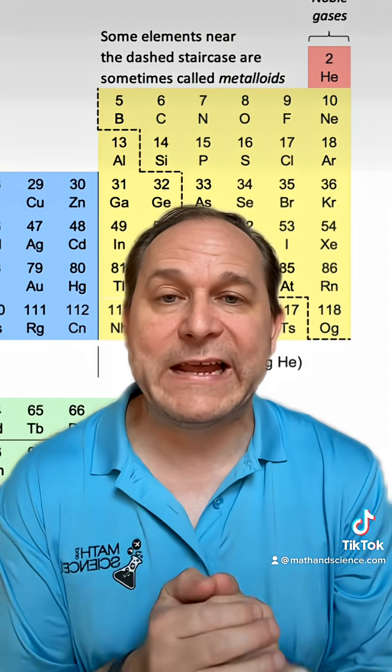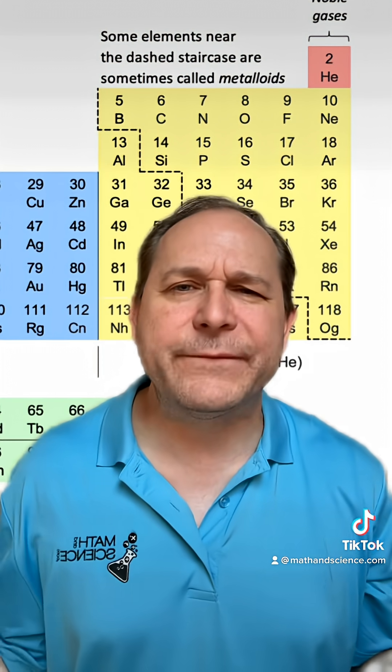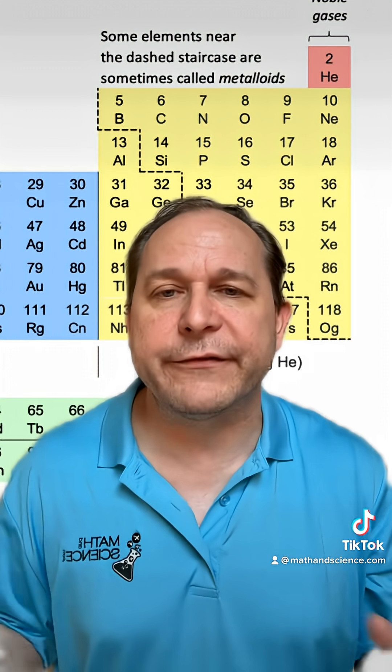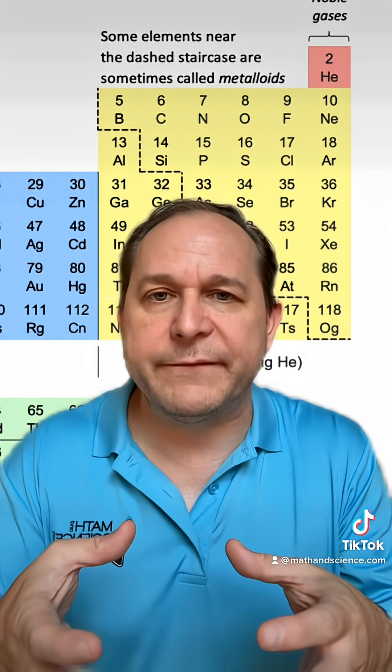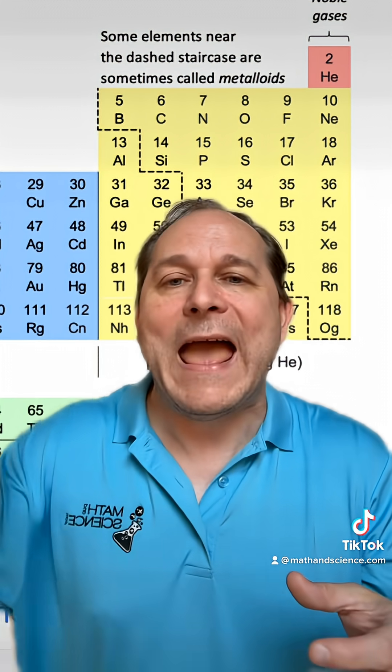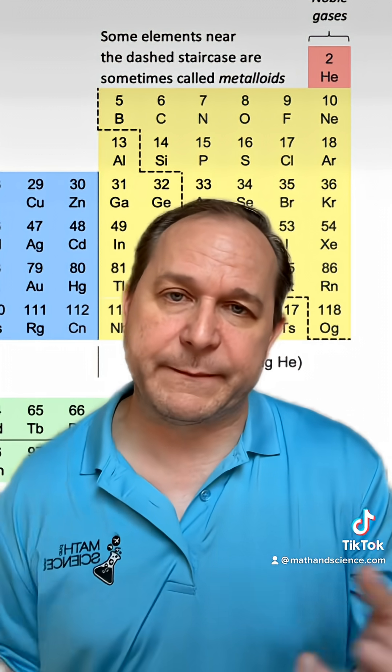And so carbon-14 actually has a half-life of something like 5,700 years. That means if you have a hunk of this stuff, after that much time has passed, half of it will have transmuted to something else.